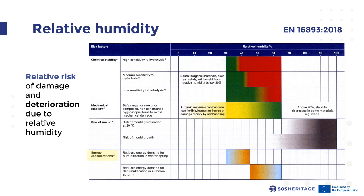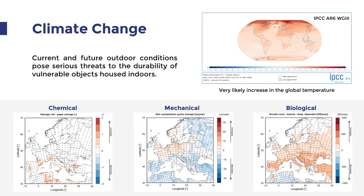Climate change, and in particular global warming, will dramatically affect the conservation of vulnerable objects conserved indoors. On the bottom of this slide are given examples of the way climate change is expected to increase — shown in red — or decrease — shown in blue — the current chemical, mechanical, and biological deterioration risks in historical buildings. For example, the chemical deterioration risk in terms of cellulose hydrolysis is expected to increase in some Mediterranean countries. The risk of mechanical damage, given in terms of the number of salt crystallization cycles per year, is expected to increase in northern European countries and decrease in most Mediterranean ones. Finally, the biological risk calculated in terms of insect growth is likely to significantly increase across all European countries, particularly in Mediterranean areas.